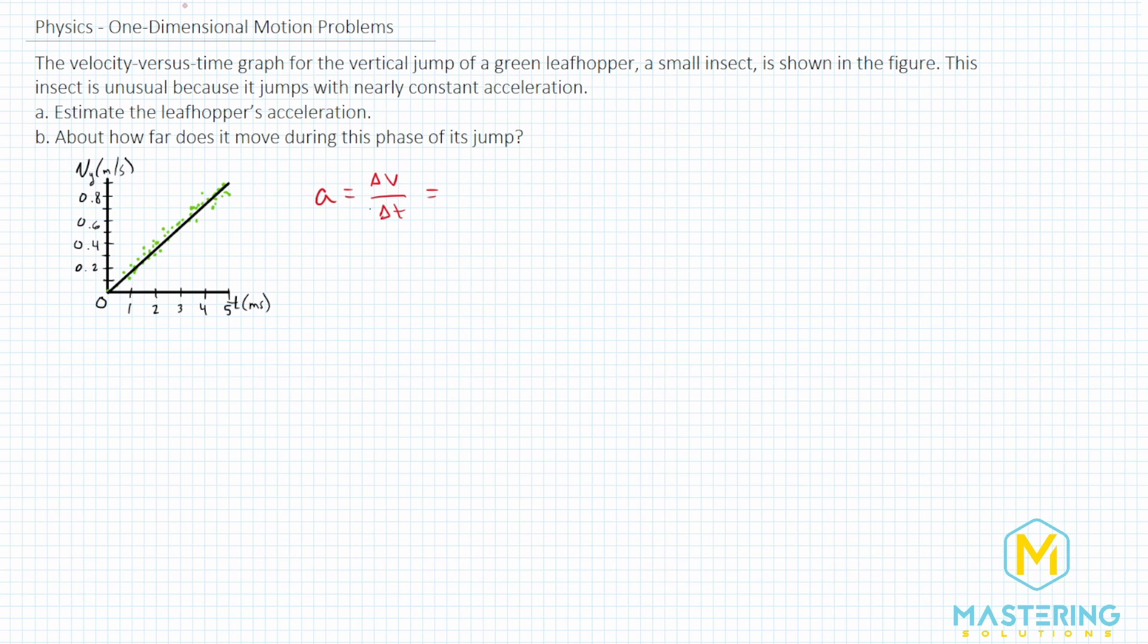So now we can break this up into the final minus initial, which is, of course, anything delta is always final minus initial. So now the time, same thing, t final minus t initial. And now we can plug in the values from the graph.